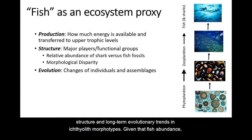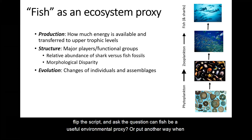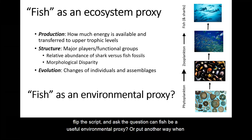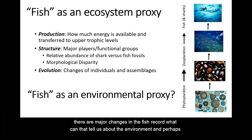Given that fish abundance, community structure, and diversity is ultimately driven by environmental conditions, one can then flip the script and ask the question: can fish be a useful environmental proxy? Or, put another way, when there are major changes in the fish record, what can that tell us about the environment, and perhaps even global climate, at that time?